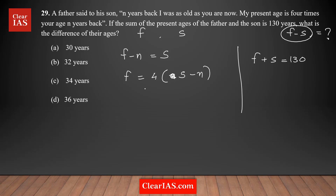We have three equations and three variables — f, s, and n — which is enough to solve and find individual values. The strategy is: first eliminate n by using substitution, so we're left with two equations in f and s, which we can then solve together.